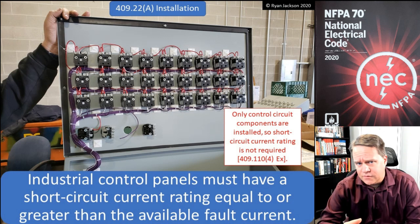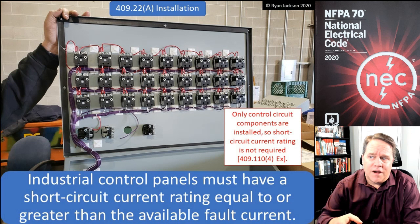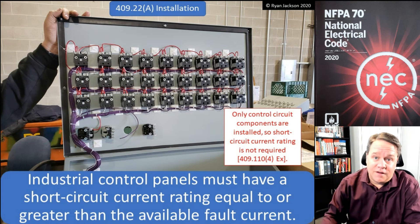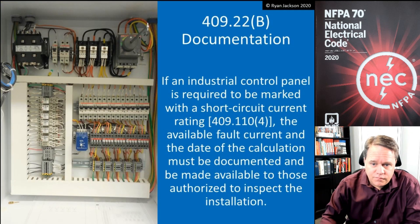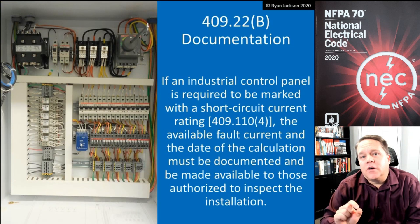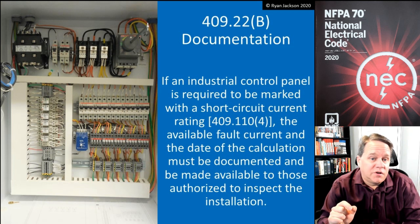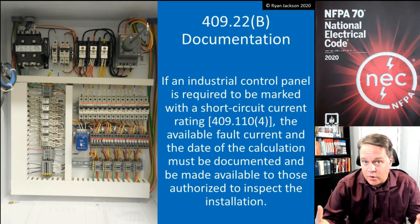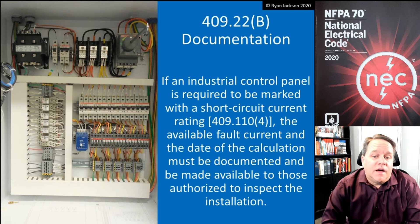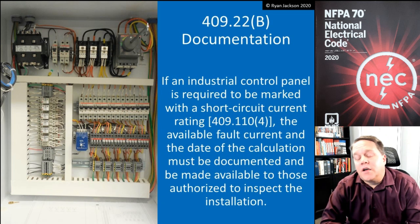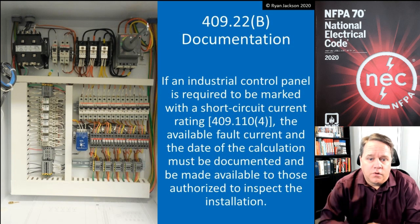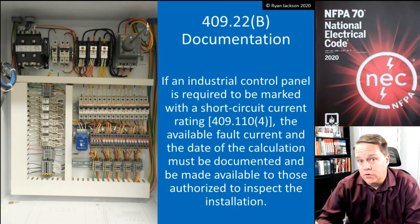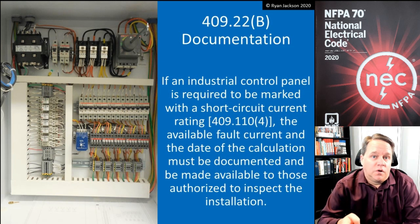Industrial control panels don't have to be listed, but if they have to have a short circuit current rating, that's going to be tough — that's not something you can figure out in the field without a field evaluation. If an industrial control panel is required to be marked with a short circuit current rating, which means there are power components in there, then the available fault current and the date of the calculation must be documented and made available to those authorized to inspect the installation. Looking at this photograph, that panel has power components and control components, so it has to have a short circuit current rating.